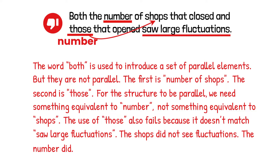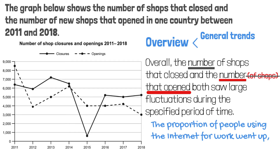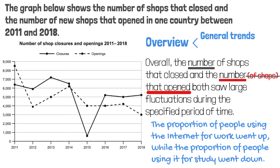That's why I repeated the word 'number.' Please also note that here we can omit 'shops' and it's actually better to omit it. We don't need to say 'the number of shops that opened' — we can just say 'the number that opened.' Here's another example: 'The proportion of people using the internet for work went up while the proportion using it for study went down.' It's better to omit 'people' and just say 'the proportion using it for study.'